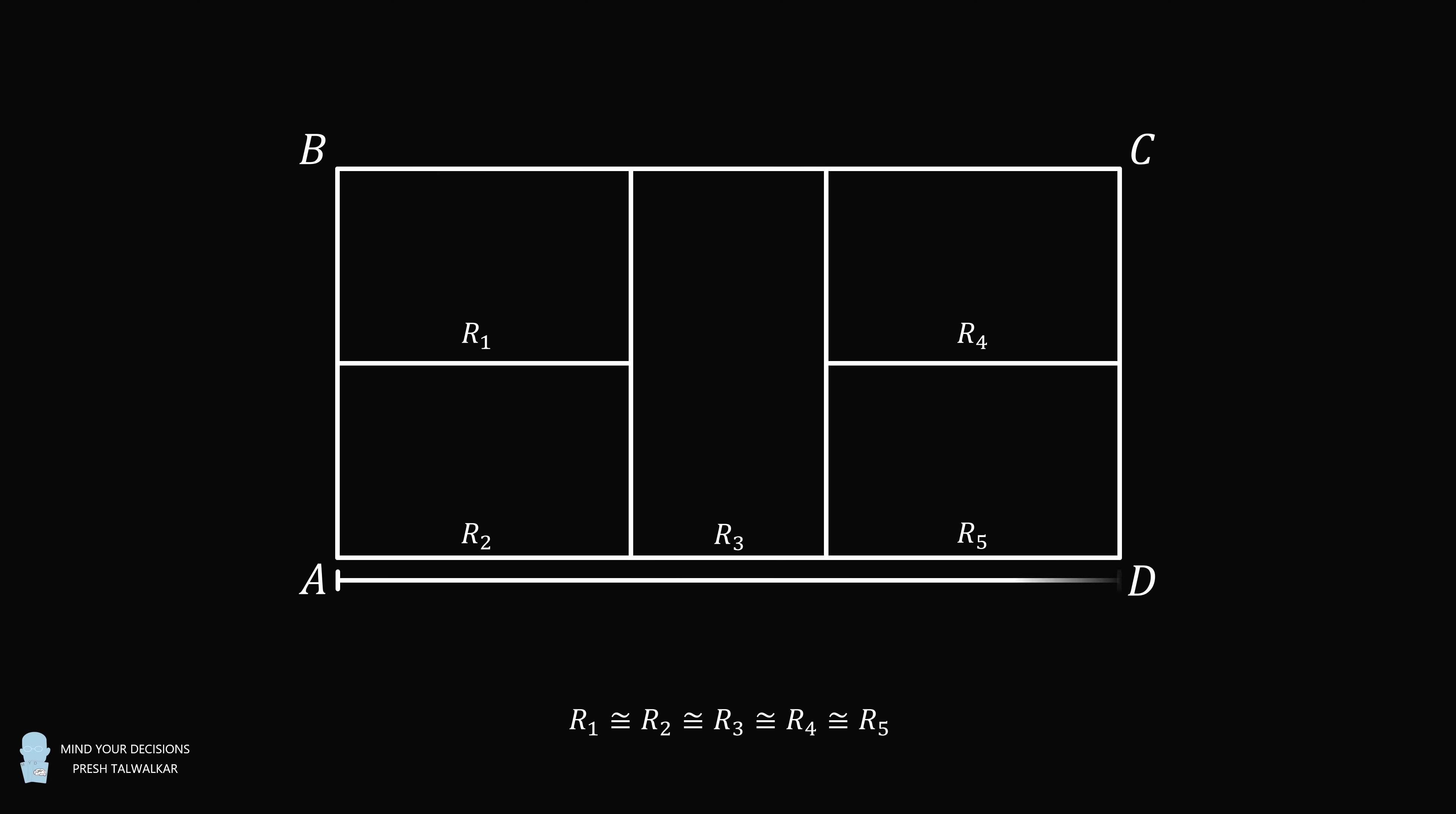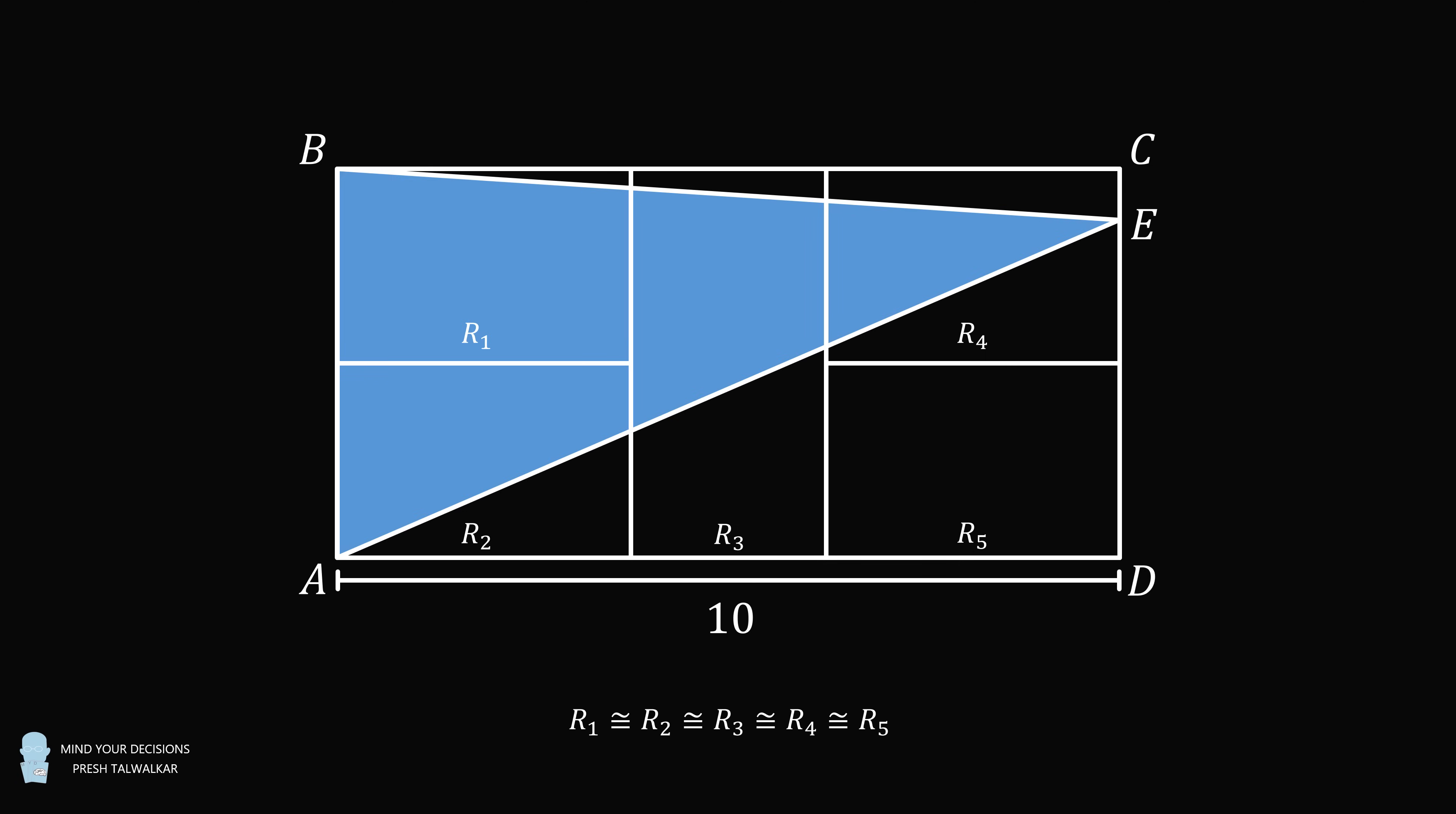Suppose the length of AD is equal to 10. Construct the triangle ABE, where E is along the side CD. The question is, what is the area of triangle ABE?